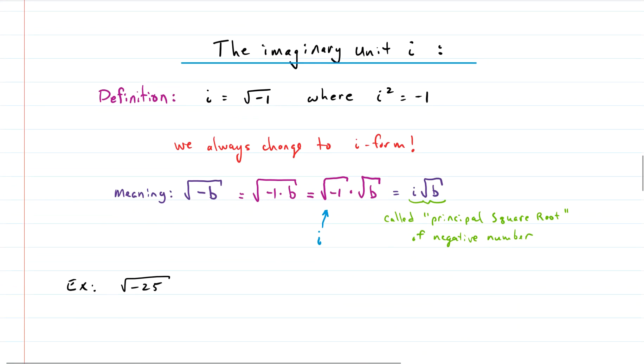The imaginary unit. The definition here that's important for you to know is i equals the square root of negative one. So if you take that and you square both sides of the equation, you end up getting i squared equals negative one. Those are both very important definitions.